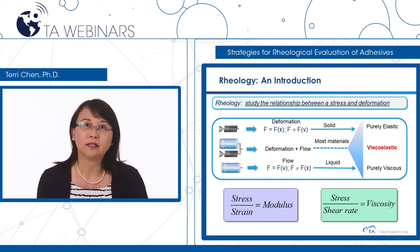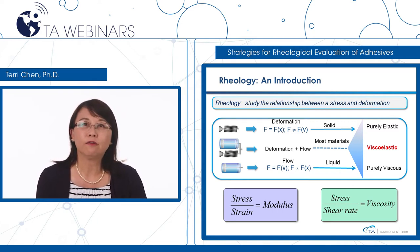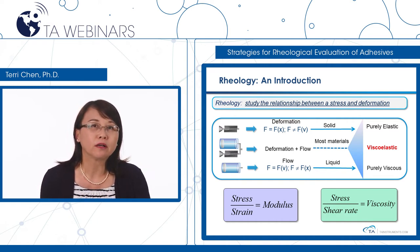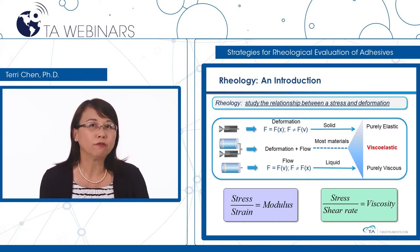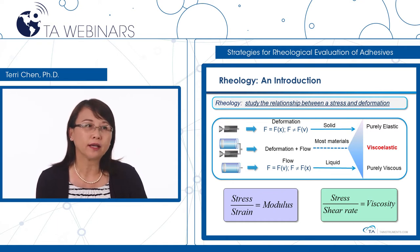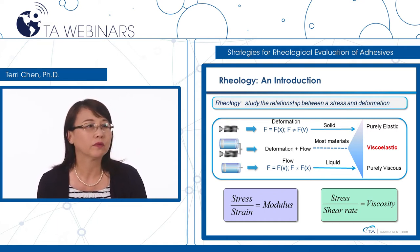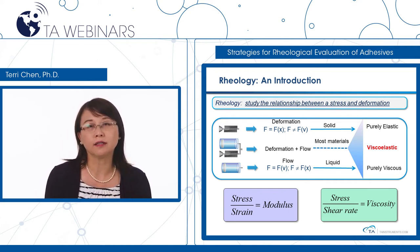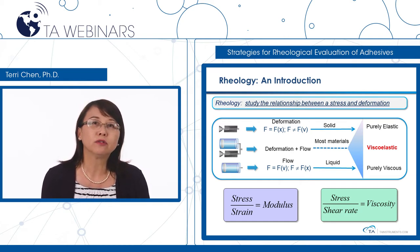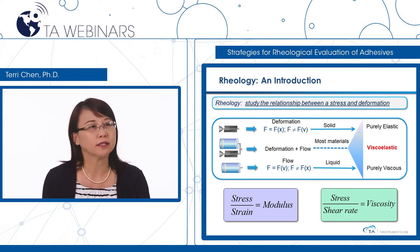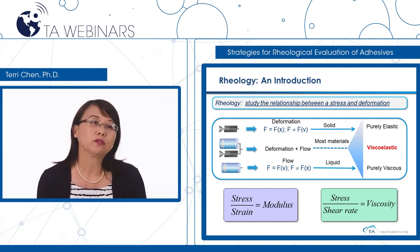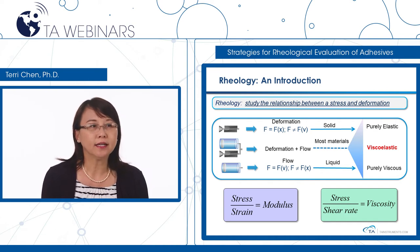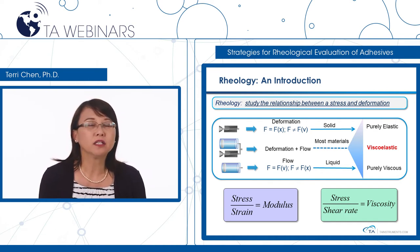First of all, what is rheology? Rheology is the science of flow and deformation of matter. It studies the relationship between stress and deformation. When you apply a stress to a purely solid elastic material, such as a spring, the stress applied is linearly proportional to its deformation — the strain. The ratio of stress over strain is defined as the modulus. When you apply a stress to a purely viscous liquid material such as water in a dashpot, stress is linearly proportional to the rate of deformation, the shear rate. The ratio of stress over shear rate is defined as the viscosity. Most materials we work with daily, such as adhesives, have both elastic and viscous properties — they are viscoelastic.